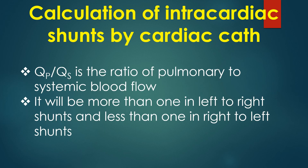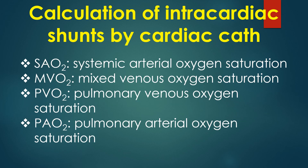QP/QS is the ratio of pulmonary to systemic blood flow — more than 1 in left-to-right shunts and less than 1 in right-to-left shunts. SiO₂ is systemic arterial oxygen saturation; MvO₂ is mixed venous oxygen saturation; PVO₂ is pulmonary venous oxygen saturation; and PaO₂ is pulmonary arterial oxygen saturation.